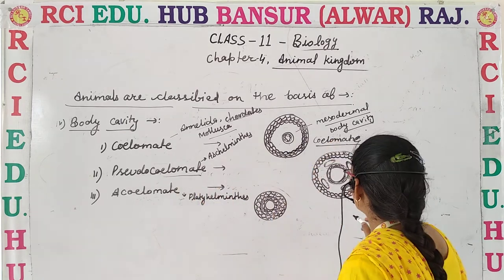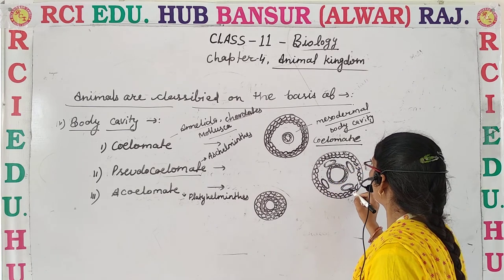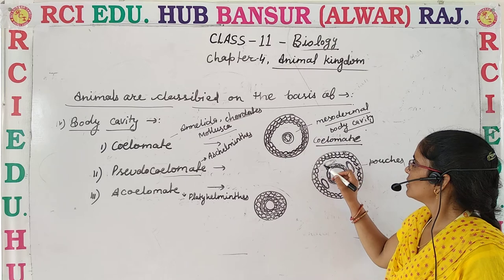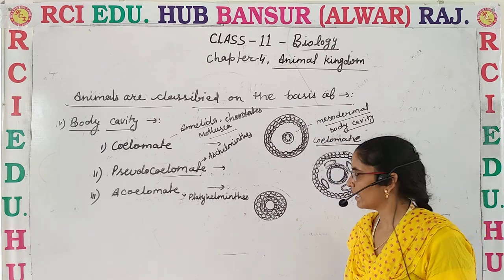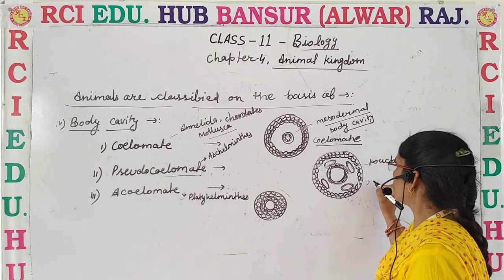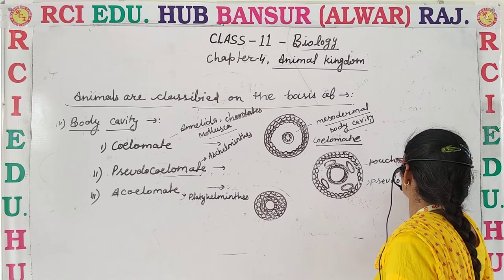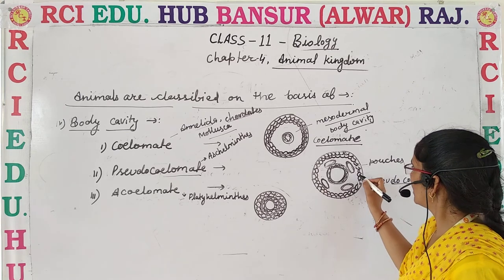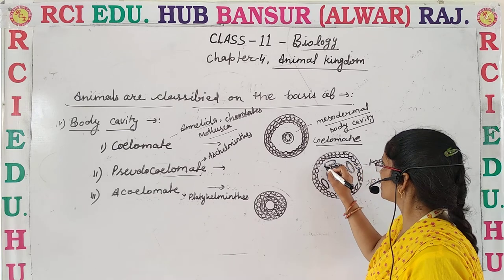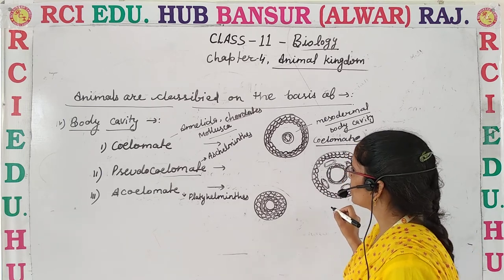Pseudocoelomate: there is not a true coelomic cavity, but it is present as variable pouches into the mesodermal region. When it is present as pouches into the mesodermal layer, the organisms are known as pseudocoelomate, and this type of body cavity is known as pseudocoelomic body cavity. The ectoderm, endoderm, and mesoderm germ layers have several pouches scattered within the mesoderm.